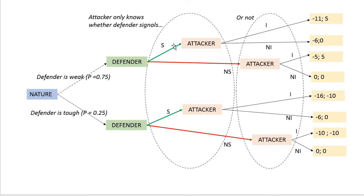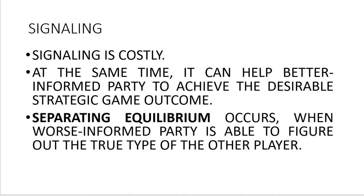Attacker should invade if he knows for sure the defender is weak, because that yields a positive payoff. Attacker should never invade if defender is tough, because that yields a negative payoff. This would be obvious in a game with perfect information, but that's not the case here — the attacker can only see whether there was a signal or not in the previous round. Signaling is costly and its main purpose is to help the better-informed party achieve a desirable strategic outcome by enabling the worse-informed party to figure out the player's type.